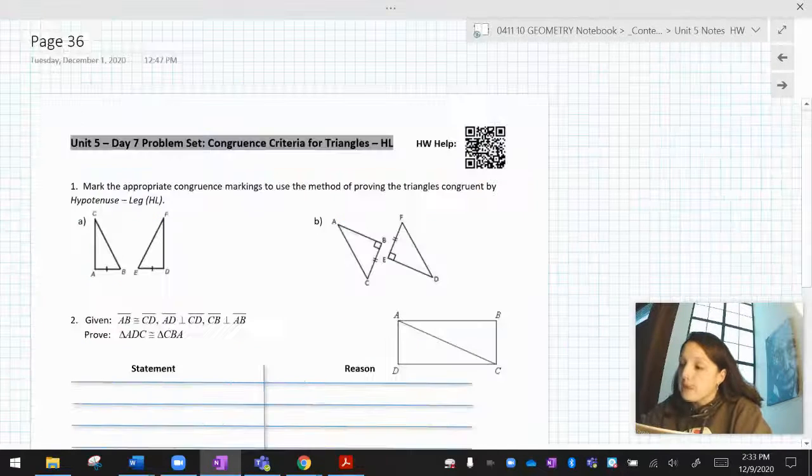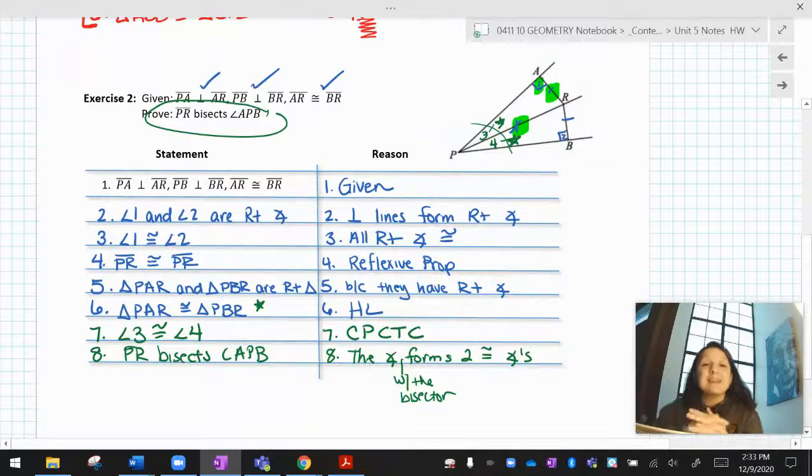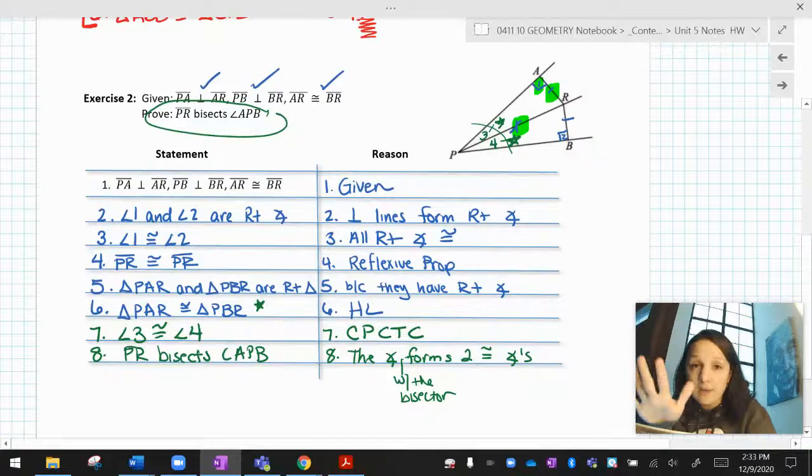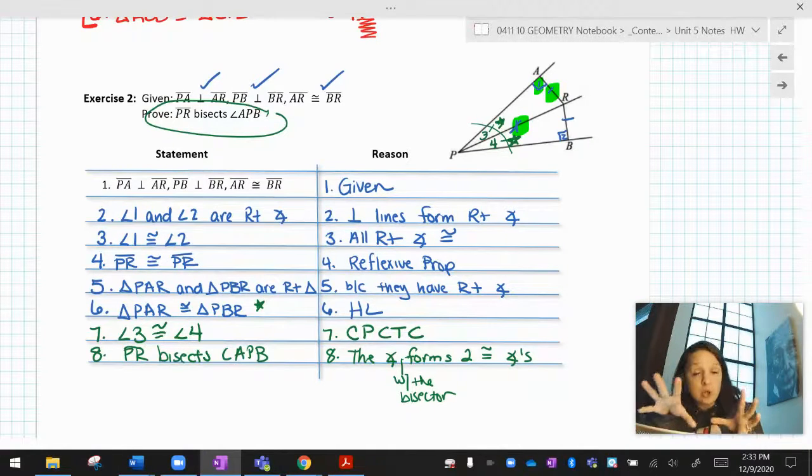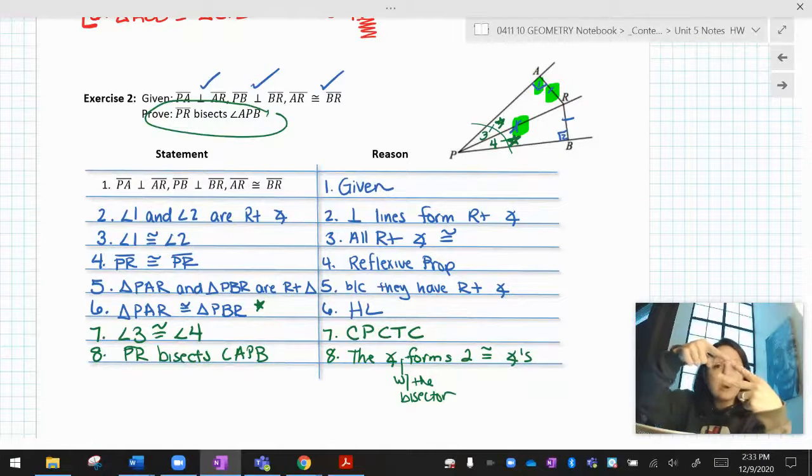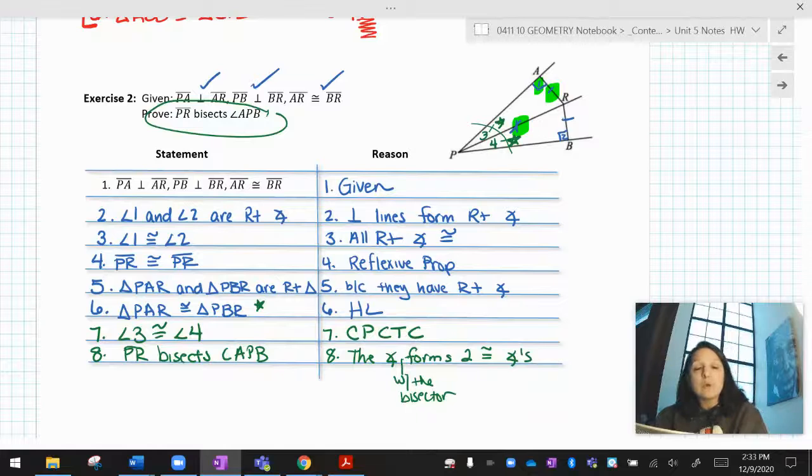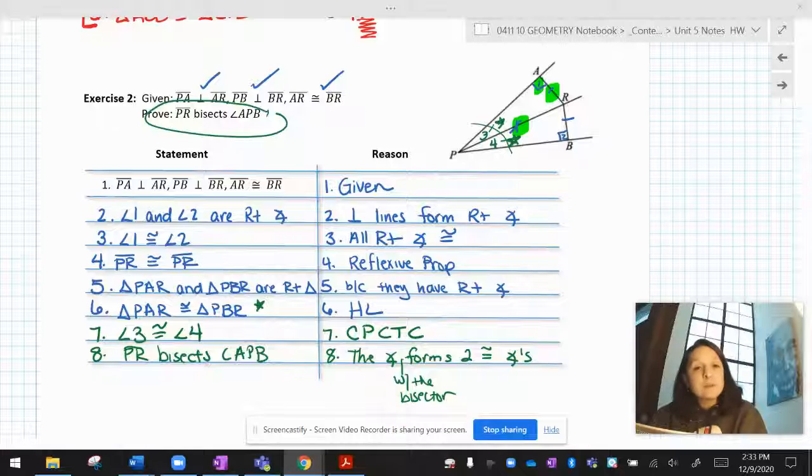So that I believe is that. And what you need to really get from this day is that ASS is still not a thing. But if you notice an ASS situation, you get to call it HL, but it takes two steps. You have to identify that you have right triangles and then you can go for HL. And with that, I'm done. Have a glorious day.